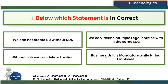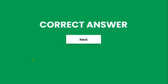Let's cross-check the fourth statement: business unit is mandatory while hiring an employee. When hiring an employee, the system first asks for the organization as legal employer, then in the employment information tab, it asks which business unit you are hiring this employee into — so it's a mandatory field. Therefore the third statement is the incorrect one, and clicking on it confirms the correct answer.